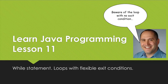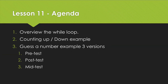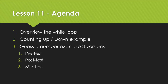We'll look at three forms of the while loop: the pre-test, where the exit condition comes at the beginning of the loop; the post-test, where the exit condition comes at the end of the loop; and the mid-test, where the exit condition comes wherever you want it. We'll do a code example playing the classic guess-a-number game in three different versions: one with a pre-test loop, one with a post-test loop, and finally the most flexible mid-test loop.